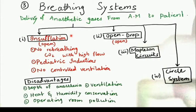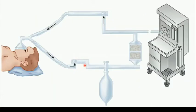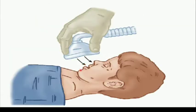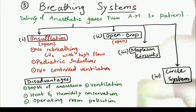The breathing systems we will discuss today are: insufflation, open drop, Mapleson circuits, and the circle system. In insufflation, there is no rebreathing of CO2 with a high flow of fresh gas. This type is normally used in pediatric inductions because children don't allow a face mask to be placed on their faces. Ventilation cannot be controlled by insufflation.